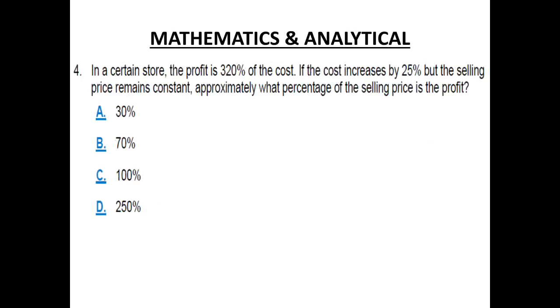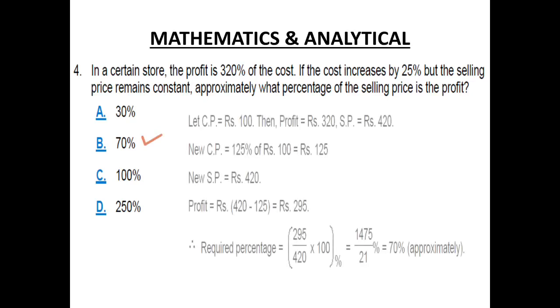Number 4. In a certain store, the profit is 320% of the cost. If the cost increases by 25% but the selling price remains constant, approximately what percentage of the selling price is the profit? The correct answer to this is 70%. Let's find out how. Let the cost price be Rs. 100. Then the profit is equal to 320. So sale price is Rs. 420.